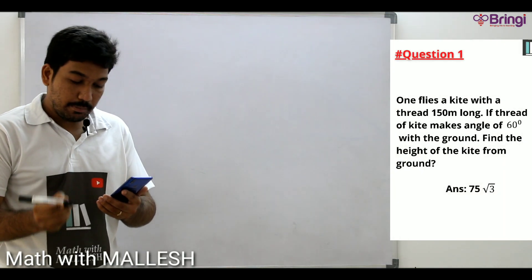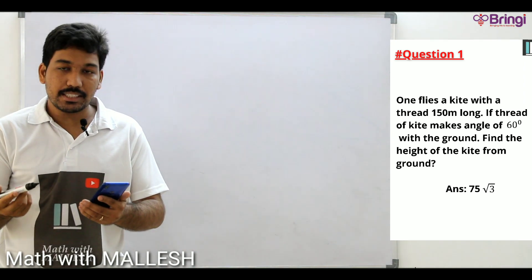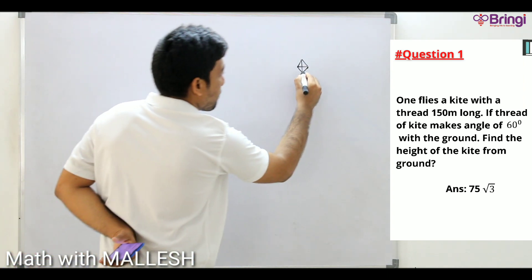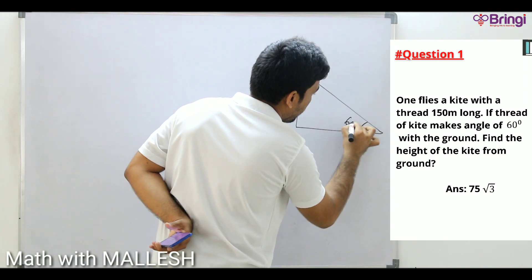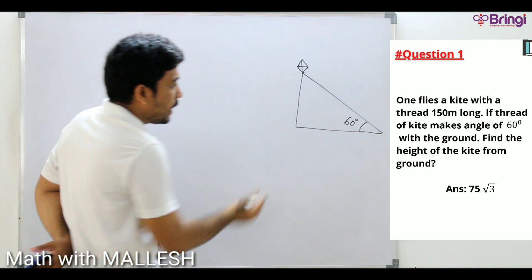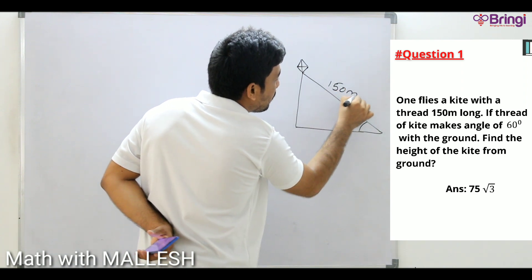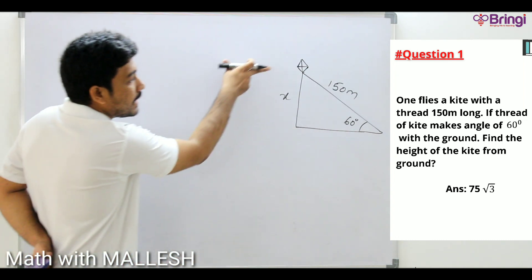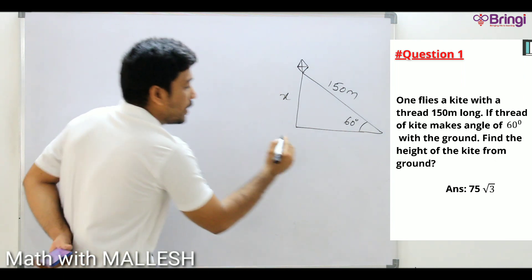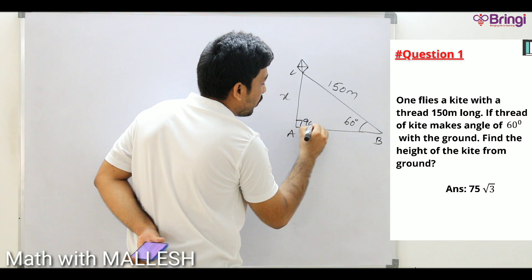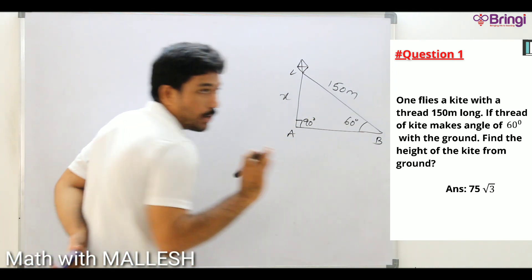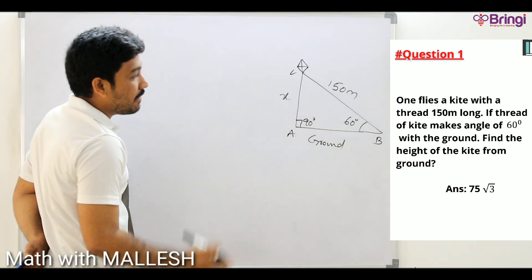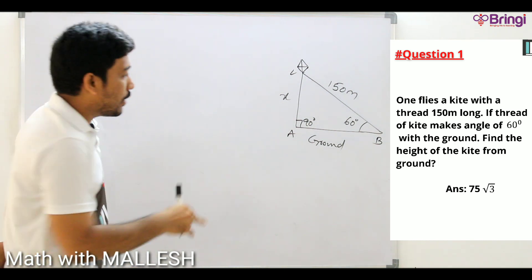Question one: someone flies a kite with a thread 150 meters long. The thread of the kite makes an angle of 60 degrees with the ground. This is the kite, flying from the ground, thread value 150 meters. Find the height of the kite from the ground. In triangle ABC, angle B is 90 degrees, AB is the ground, BC is the thread of 150 meters, and AC is the height x.